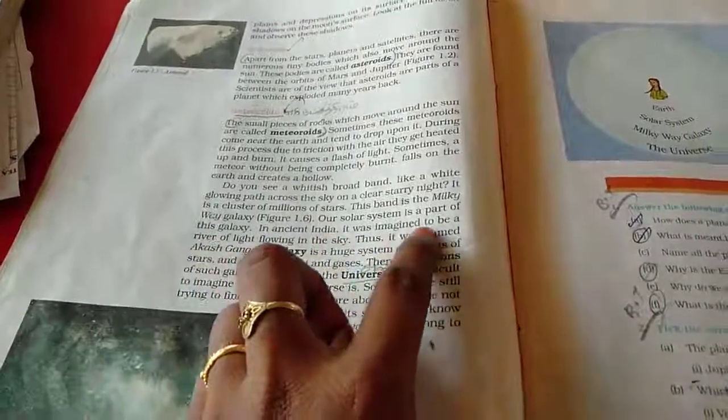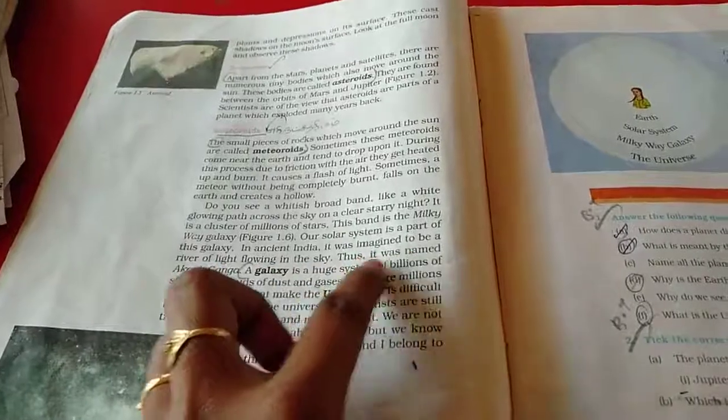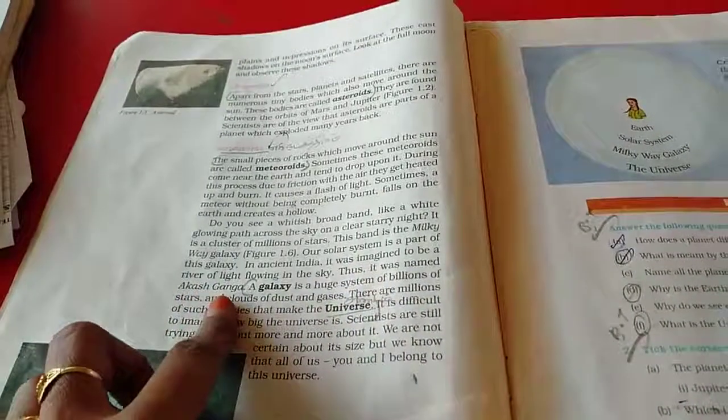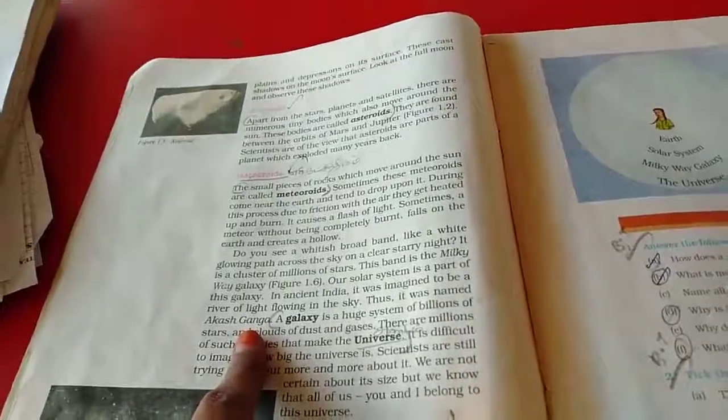In ancient India, it was imagined to be a river of light flowing in the sky. Thus, it was named Akash Ganga. Have you heard this name in Tamil? So, that is only Akash Ganga.